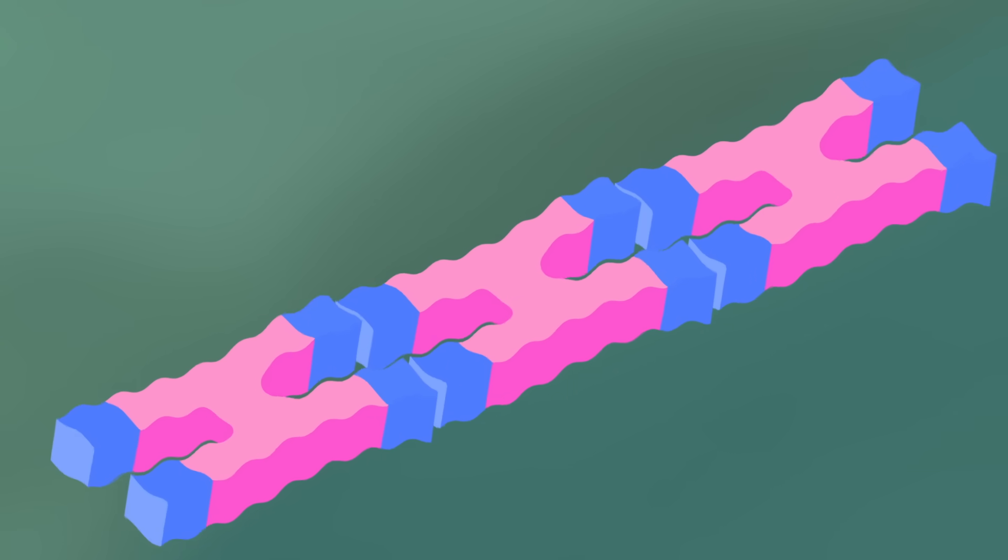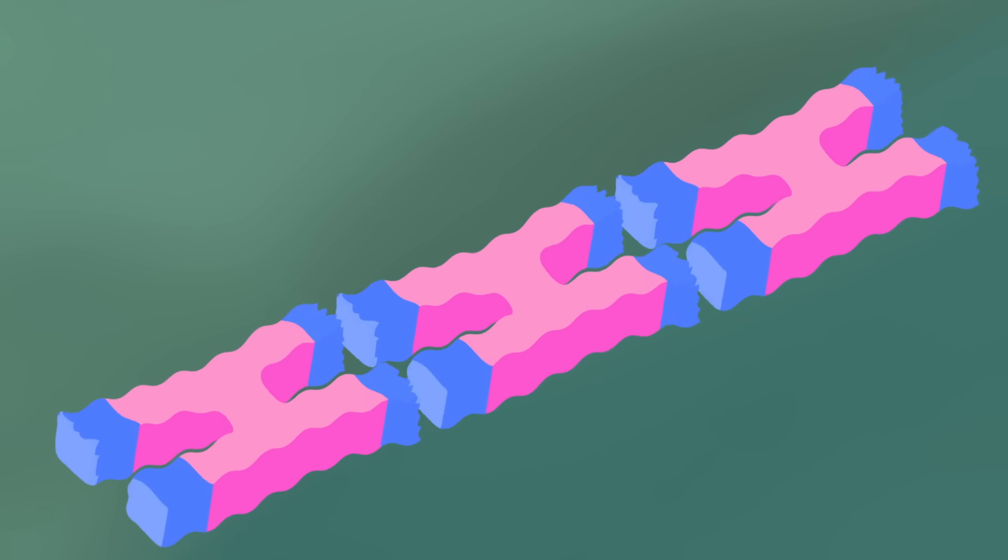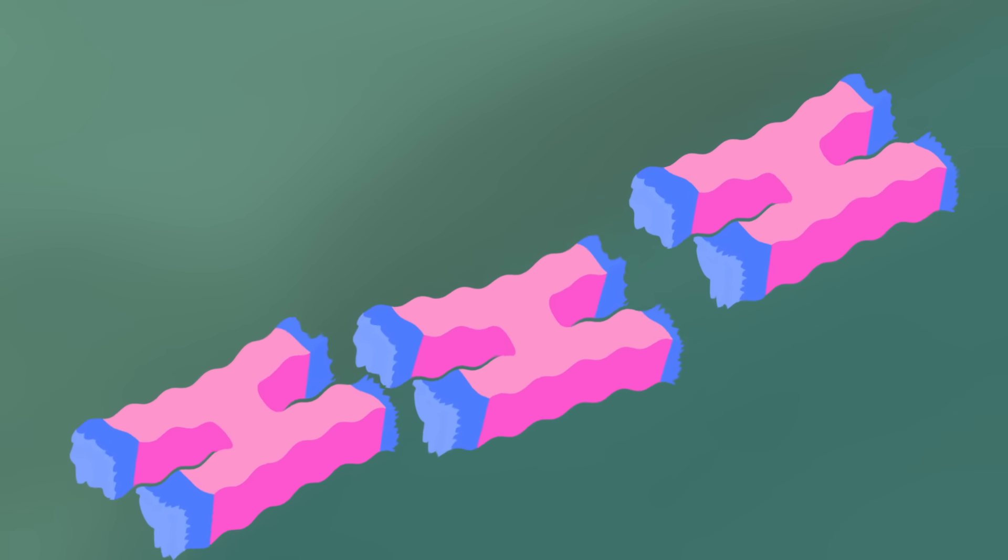Telomeres cap chromosomes to allow DNA to get copied every time a cell divides, without damaging the cell's genetic code. And they shorten with each cell division. When telomeres become too short, a cell can no longer divide, and it dies.